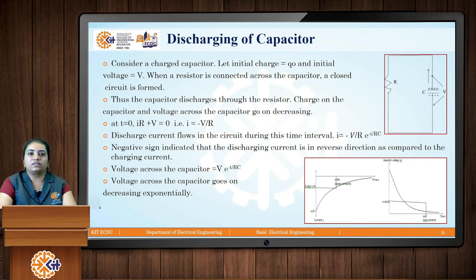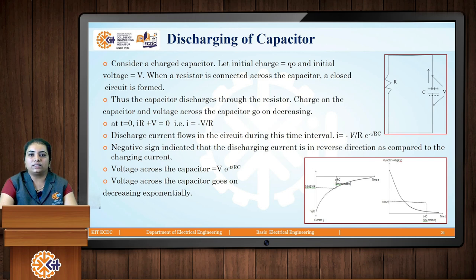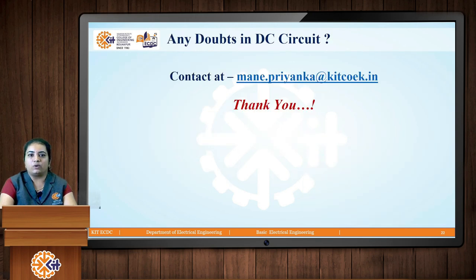In this unit we discussed some basic concepts of electrical engineering, then DC circuits, Kirchhoff's voltage law and current law, two examples of mesh analysis and nodal analysis, DC circuit analysis using series and parallel combination of resistances, the concept of constant voltage source, and the difference between ideal and practical voltage sources. Finally, we concluded with the resistance-capacitor combination connected to a DC source, discussing charging and discharging of the capacitor. Thank you — if you have any doubts you can contact me at the email ID provided.